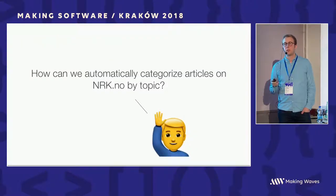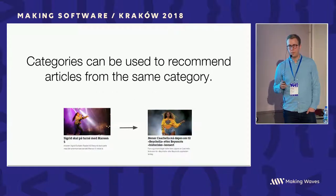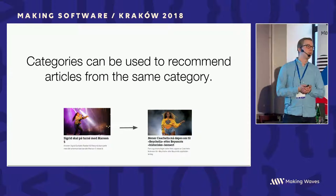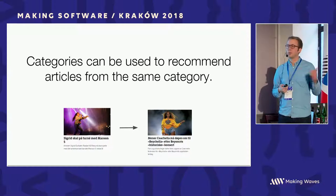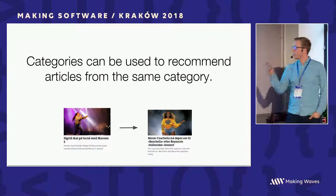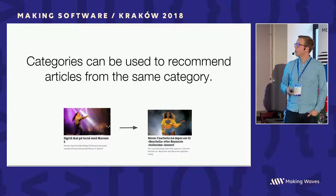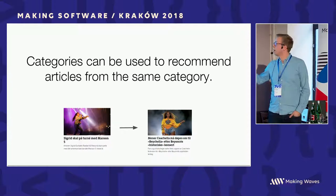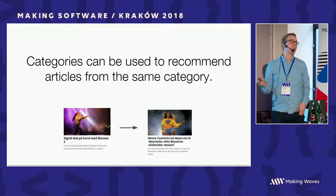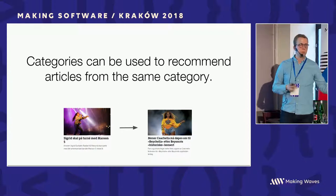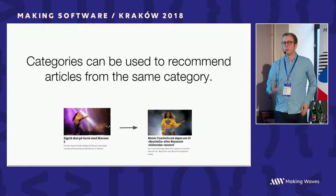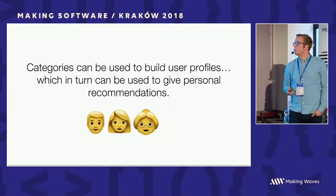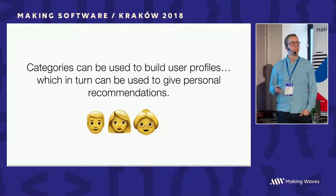The topic is: how can we automatically categorize articles? I work in the recommendation team, and we want to provide recommendations of relevant content in context of other content. For example, we have one article about Sigri going on tour with Maroon 5 — another good recommendation might be an article about Beyoncé. With good categorization we could know this one is about music, that one is also about music, and use it as a recommendation. More interesting is that we can use categories to build user profiles, which in turn can be used to give personal recommendations.